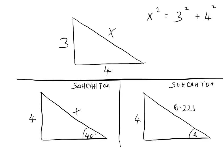Pythagoras' theorem states that the square of the length of the hypotenuse is equal to the sum of the squares of the lengths of the other two sides. So in this situation, x squared equals 3 squared plus 4 squared. If you're not sure what the hypotenuse is, it's the longest side in the triangle and also the side directly opposite the right angle. It has to be on its own, equal to the sum of the squares of the other two sides.